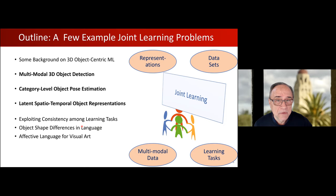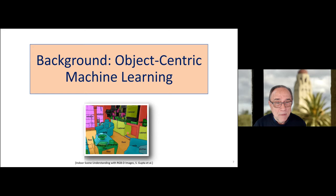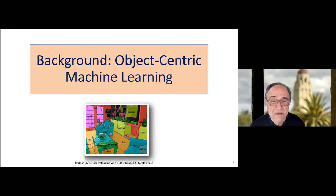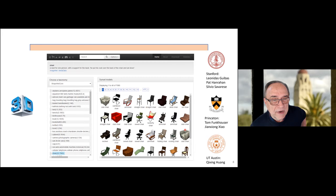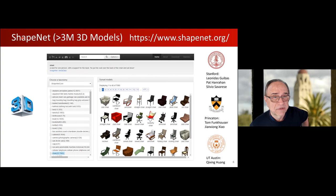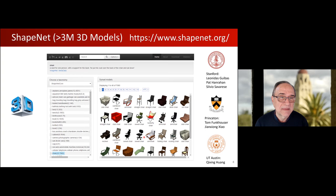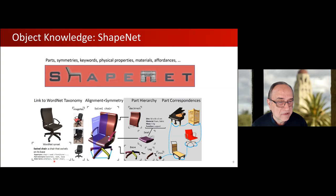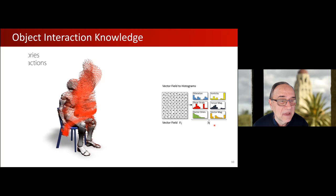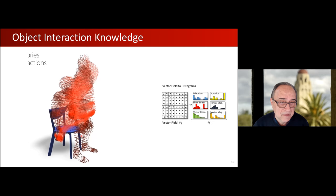The world is complicated, but it's also decomposable into the stable entities we call objects. Objects are quite important because they maintain their properties and attributes, get moved around, and therefore factorize the complexity of the world. In my group, for some years now, we've been working on collecting datasets that facilitate understanding objects. One of them is the ShapeNet repository of over 3 million models, which is joint work with Princeton and UT Austin. The key contribution is not just the aggregation of models but the semantic annotations — keywords describing objects and their parts, geometric information about object parts, object symmetries, part hierarchies, part correspondences. More and more the focus is on understanding interactions between humans and objects and the affordances of objects, since almost every designed object is meant to help some human activity.